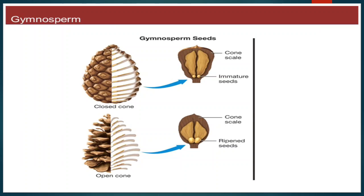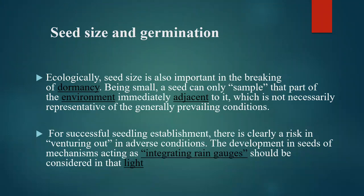Gymnosperm cones: you can observe here in the diagram an open cone and a closed cone. Seed size and germination: ecologically, seed size is also important in the breaking of dormancy.